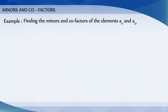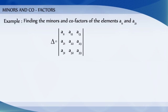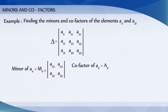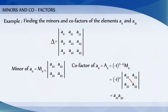let us find the minors and cofactors of elements a11 and a21 in the determinant delta, which is a 3x3 determinant with elements a11, a12, a13, a21, a22, a23, a31, a32, a33. The minor of a11 is M11, equal to the determinant of a22, a23, a32, a33. This determinant is obtained by deleting the first row and first column where a11 belongs. The cofactor of a11 is A11, equal to minus 1 whole to the power 1 plus 1, into M11, which equals a22 times a33 minus a23 times a32.